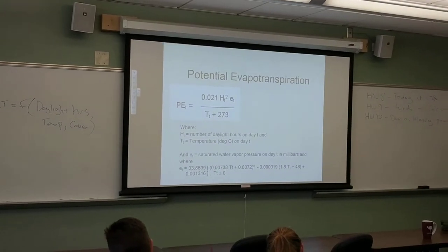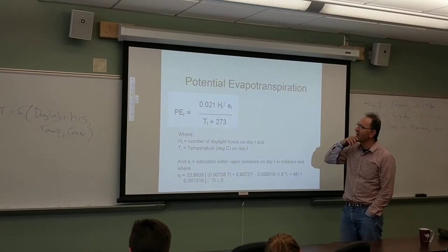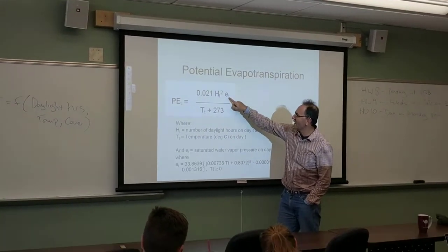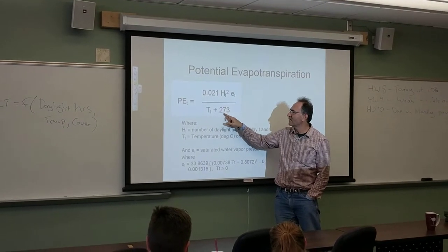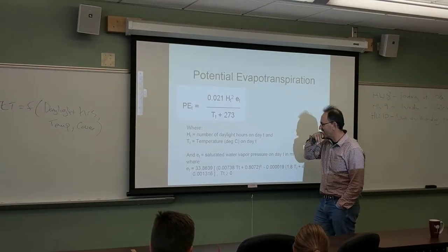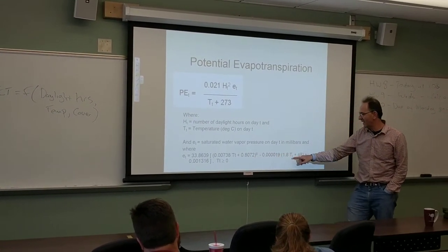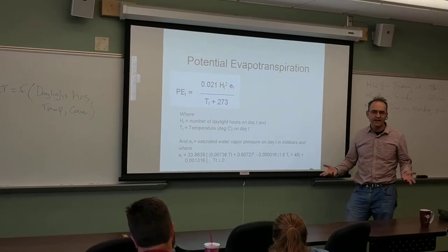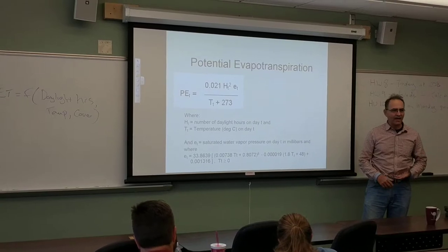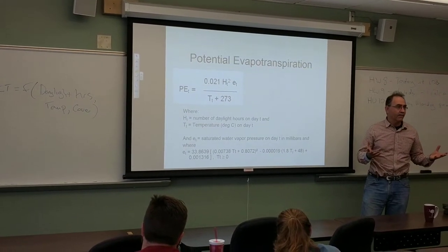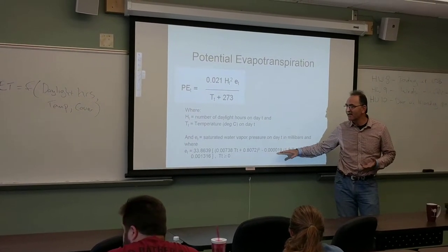The Heyman formula is in the book. It's daylight hours times saturated water vapor pressure over temperature plus a Kelvin adjustment — so it's just a temperature adjustment. Your vapor pressure is essentially a function of temperature. This is a physical equation that is fairly precise and accurate, much like tracking dissolved oxygen in water.